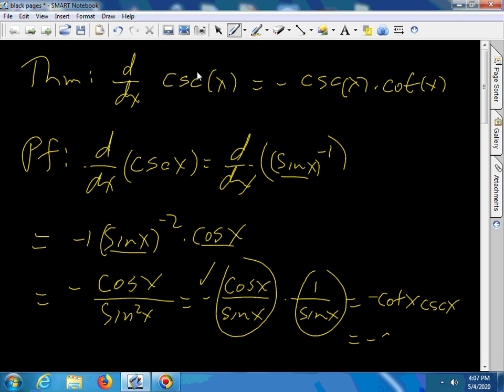Which is exactly what I said. I just permuted the answer. It's cosecant x negative times cotangent x. That's negative cosecant x times cotangent x.